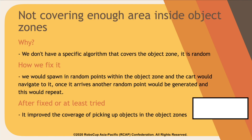Not covering enough area inside object zones was an obstacle we had to overcome. This happened because we didn't have a specific algorithm to cover the object zone. For example, when the cart ran out of the object zone, we would turn it around to go back inside, and as you can imagine, that could lead to a lot of area not being covered, especially if the object zone is very large.